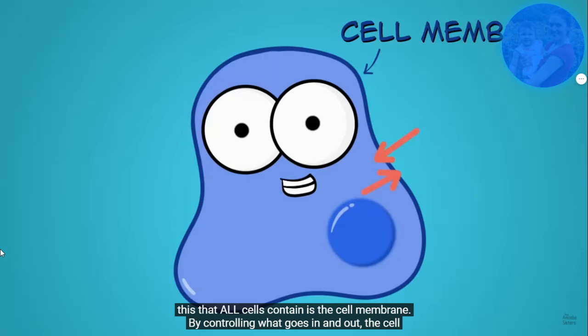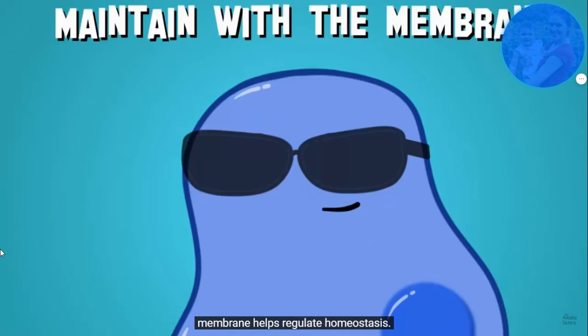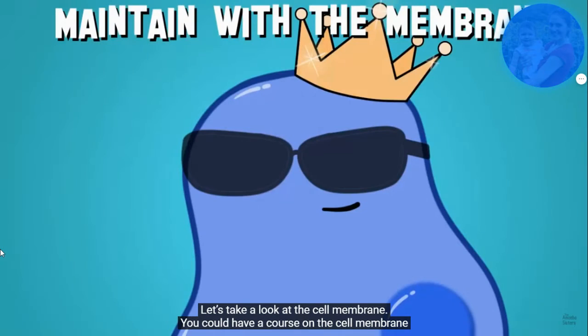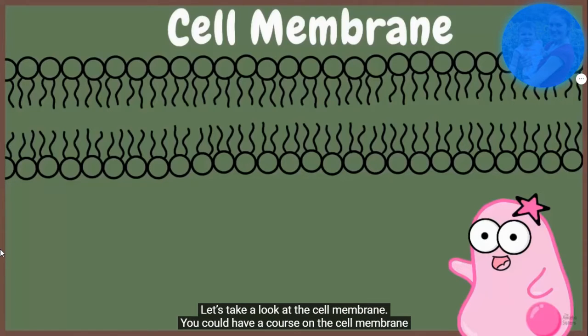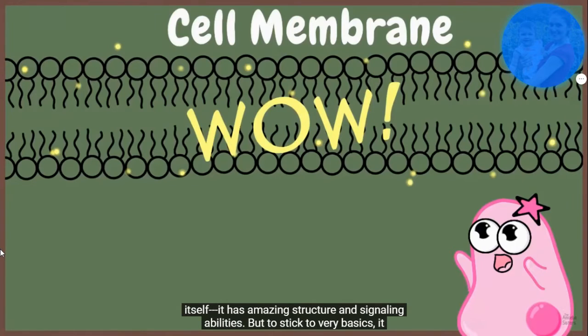A very important structure for this that all cells contain is the cell membrane. By controlling what goes in and out, the cell membrane helps regulate homeostasis. It's the homeostasis king. Let's take a look at the cell membrane. You could have a whole course on the cell membrane itself. It has amazing structure. It has signaling abilities.